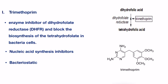Trimethoprim is an enzyme inhibitor of dihydrofolate reductase, or DHFR in short, and blocks the biosynthesis of tetrahydrofolate in bacterial cells. Take a look at this graph here where the action of trimethoprim is indicated against dihydrofolate reductase, the enzyme that carries out the conversion of dihydrofolic acid into tetrahydrofolic acid, or tetrahydrofolate.